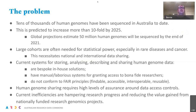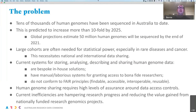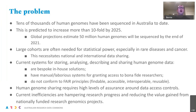Large cohorts are often needed for statistical power in research, especially in rare diseases and cancer. This necessitates national and international data sharing because individual research groups rarely have sufficient cohorts on their own. Current systems in Australia for storing, analyzing, describing and sharing human genome data are bespoke in-house solutions with manual, laborious systems for granting access and generally do not conform well to FAIR principles.